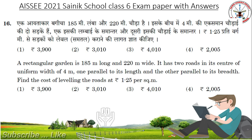The rectangular garden is 185 meters long and 220 meters wide. It has two rows in its center of uniform width of 4 meters — one parallel to its length and the other parallel to its breadth. Find the cost of leveling the rows at 1.25 per square meter. Answer is 2005 rupees.